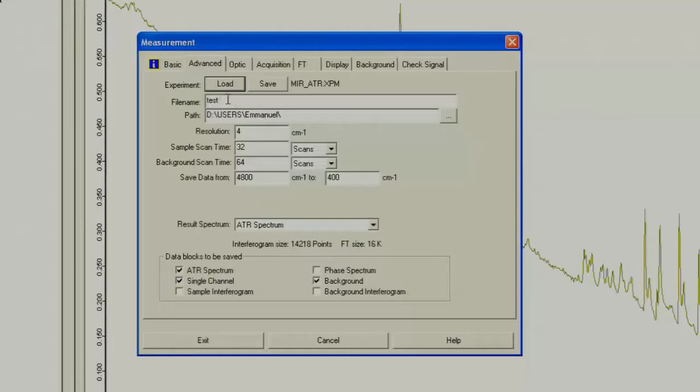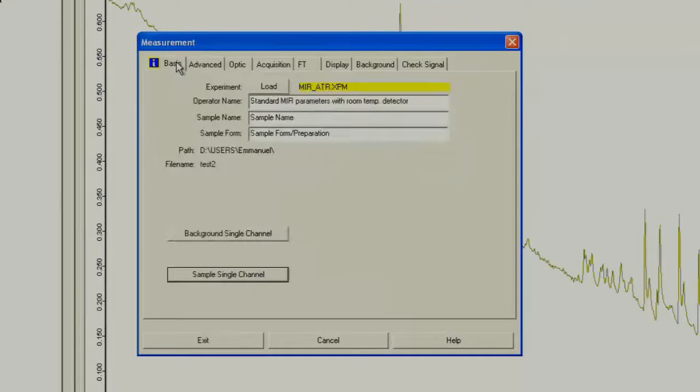Now you can go back to the advanced tab, and change the file name. After you change the file name, go back to the basic tab, and click sample single channel.